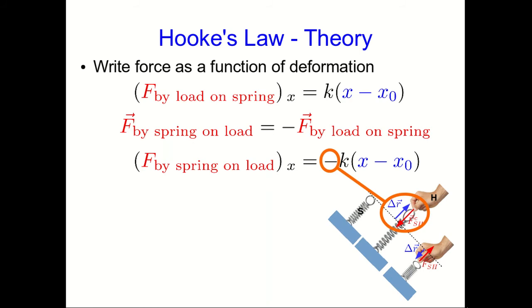That negative sign is simply saying that the force exerted by the spring points in the opposite direction to the displacement and either of these forms of the equation are what we call Hooke's law.